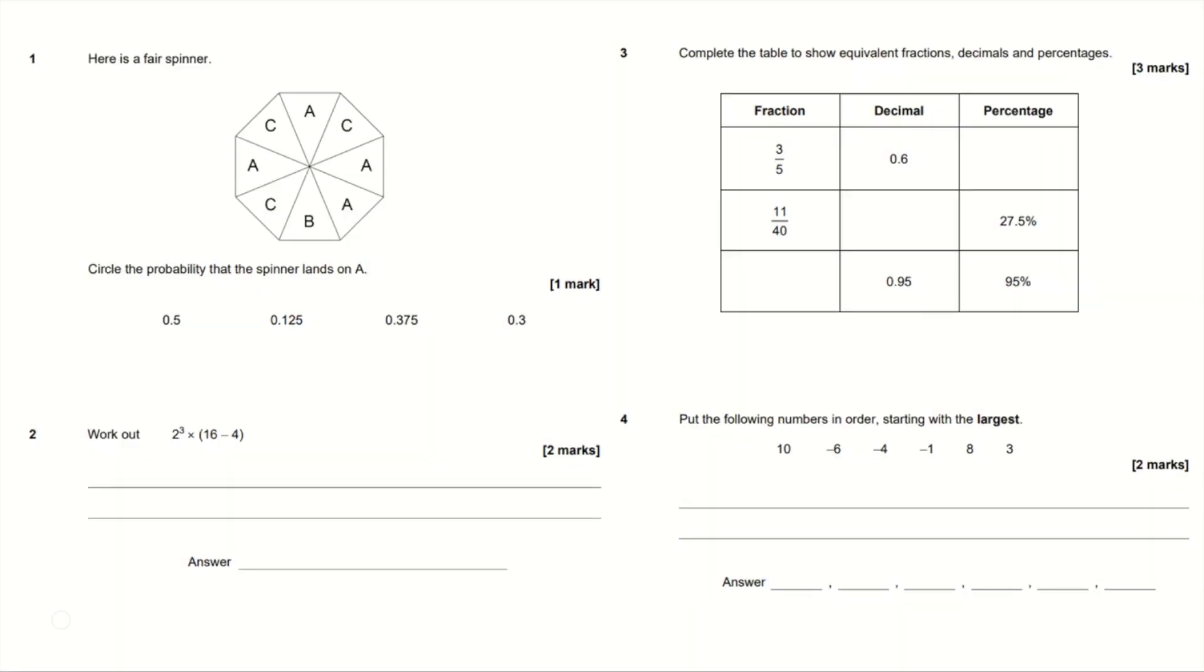Question 1. Here is a fair spinner. Circle the probability that the spinner lands on A. Now first of all we have to count how many sections there are on the spinner.